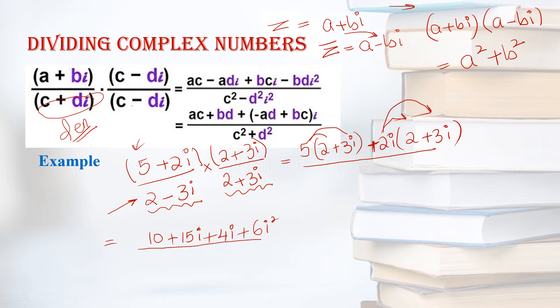Your a is 2, so you write 2² plus — the formula always gives plus, no matter what sign is written. And b is 3, so you write 3². So 2² means 4, plus 3² means 9.